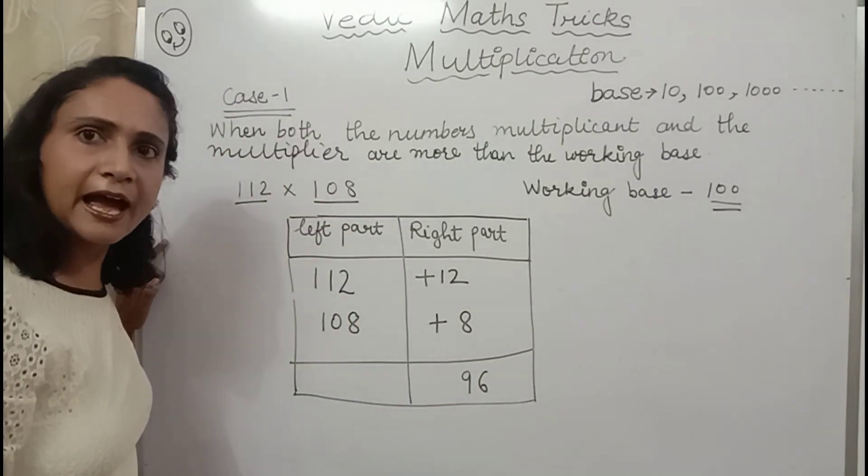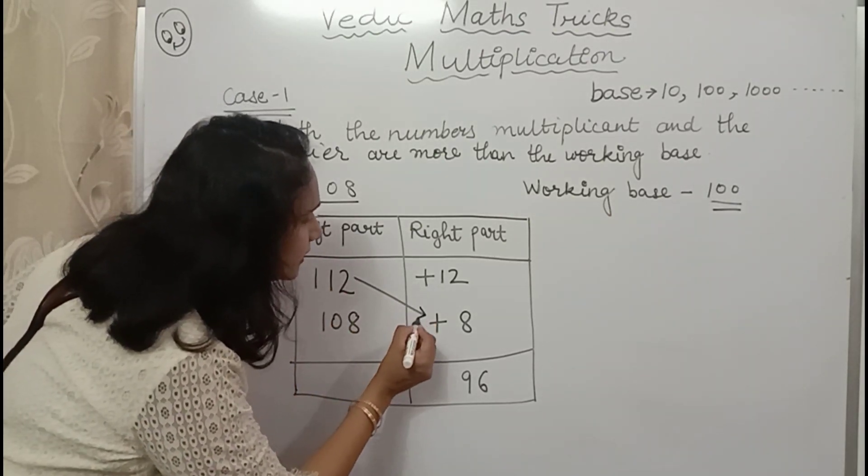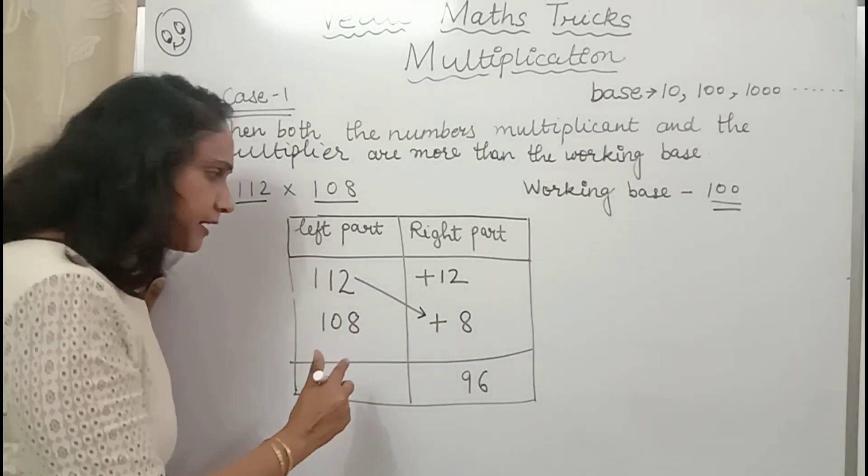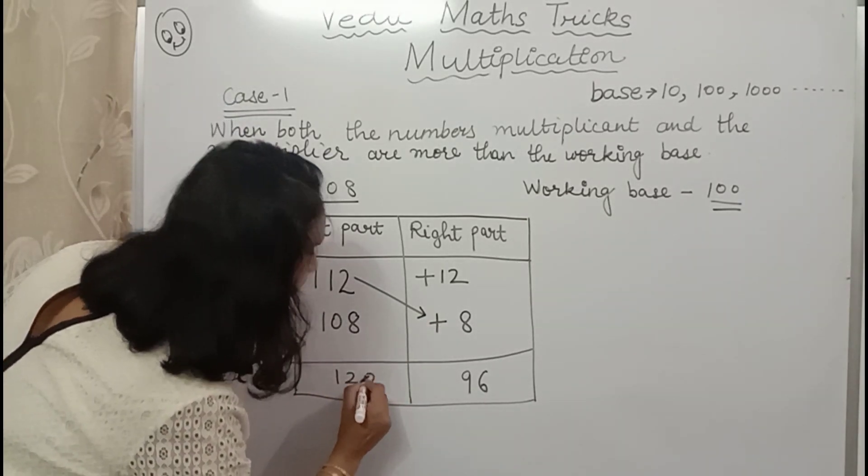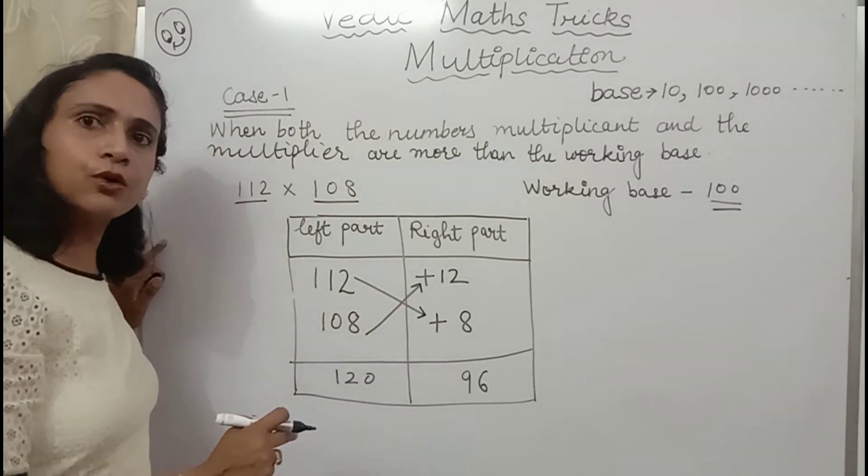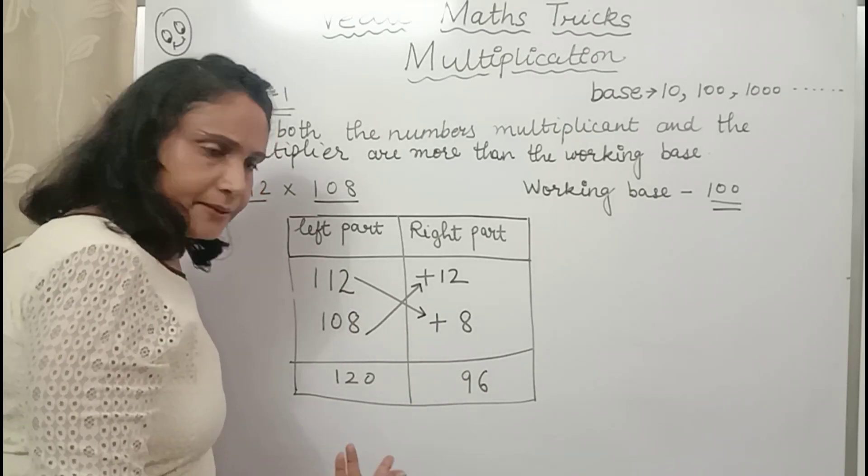And here what I have? Here I have left part. So here what we are going to do? We are going to evaluate the cross. 112 plus 8. It will become 120. Similar answer I will get. 108 plus 12. So whatever cross you are taking, answer you are going to get the same.